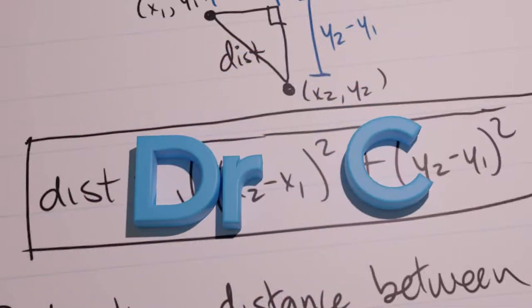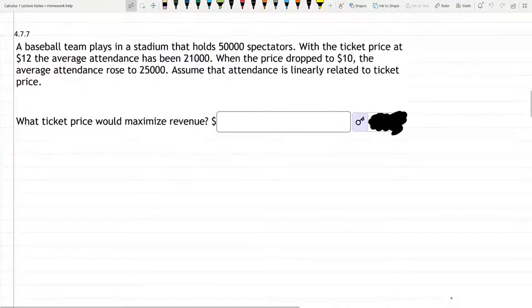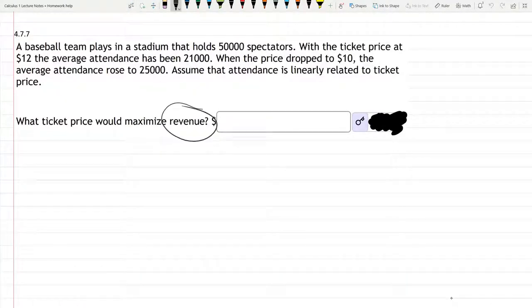This question is optimization, so we need to set up an equation for the revenue function, take the derivative, and set it equal to zero. Creating this equation is the tough part.